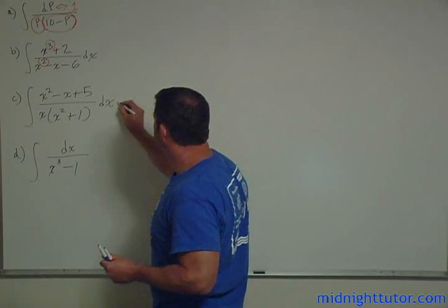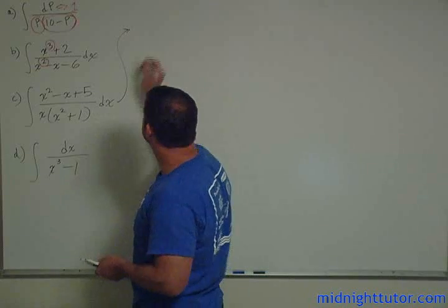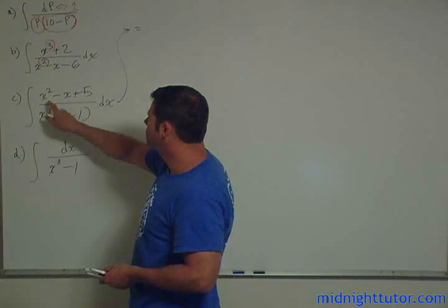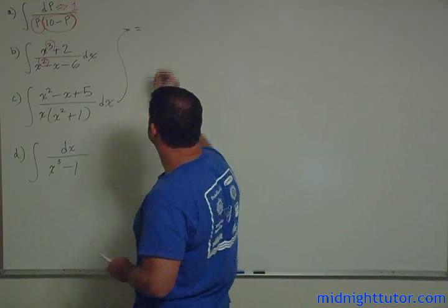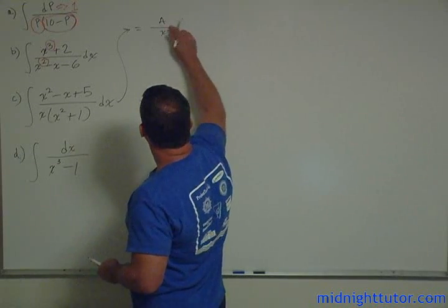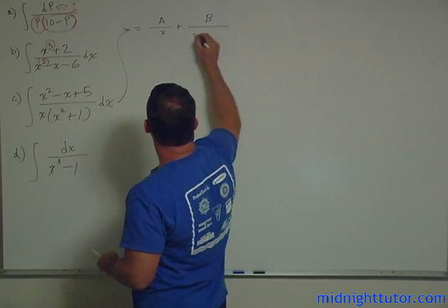So here we're going to just go, I'll give myself a little space, and we'll say this is the same as, now we need an x squared. We've got plenty of terms down here to give us our x squared, right? So this is going to be the same as A over x plus B over x squared plus 1.